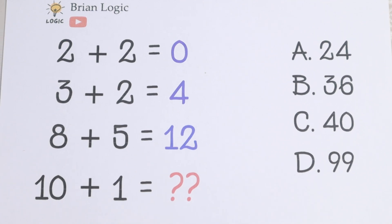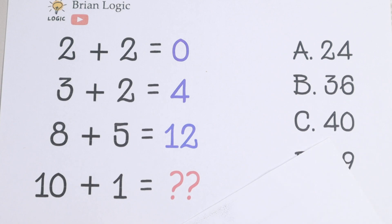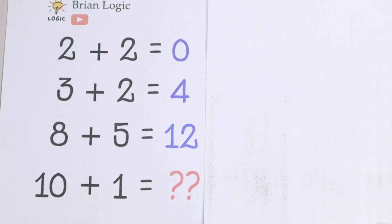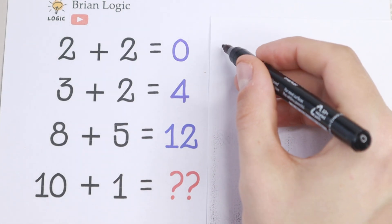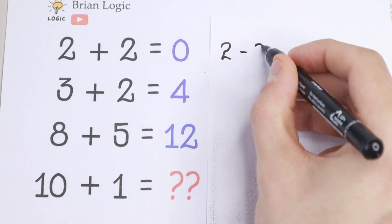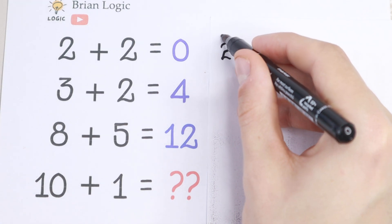So let's try to solve this interesting question. First of all we can see that 2 plus 2 equal to 0. This is incorrect, because we know that 2 minus 2 equal to 0 is correct. So let's write that 2 minus 2 equal to 0.